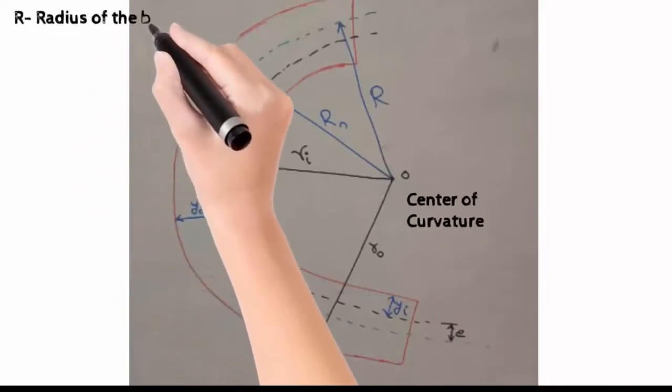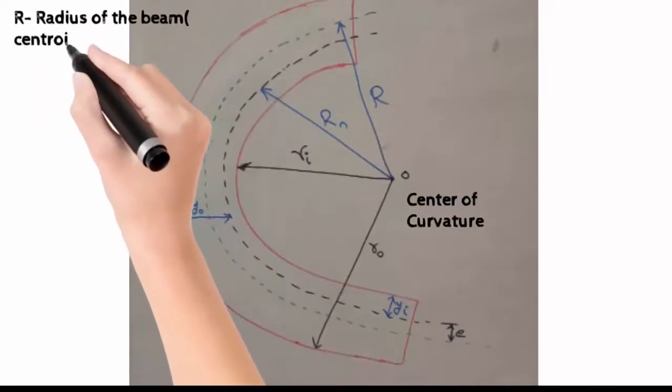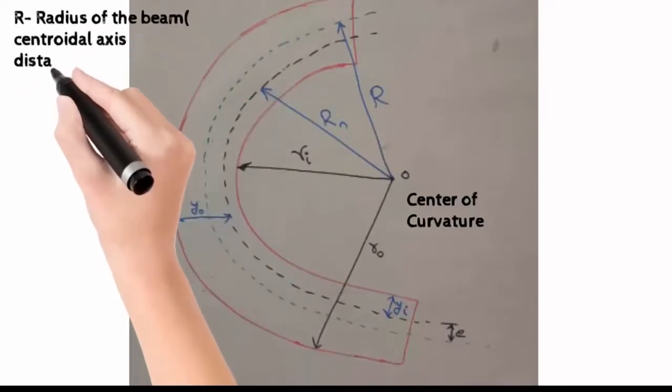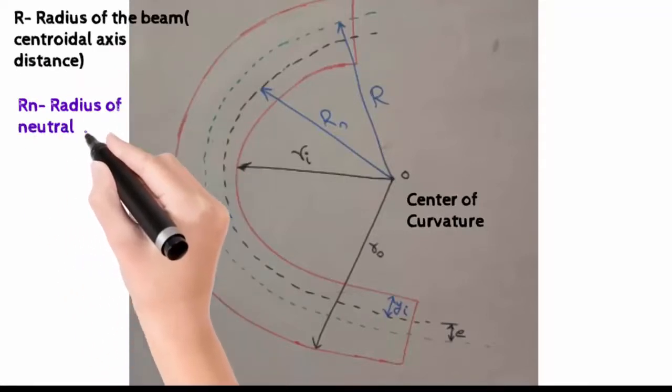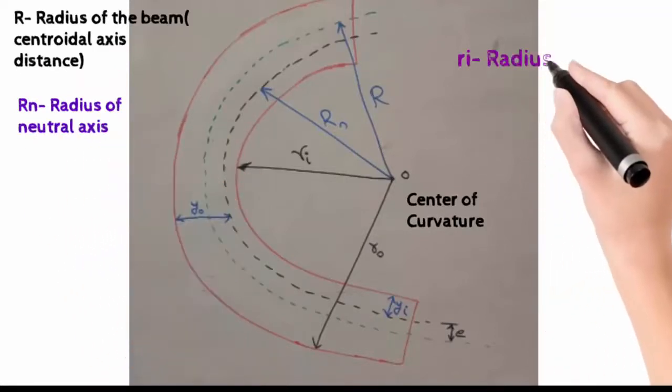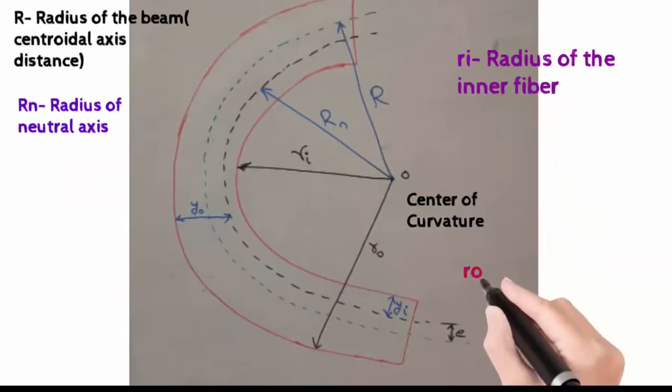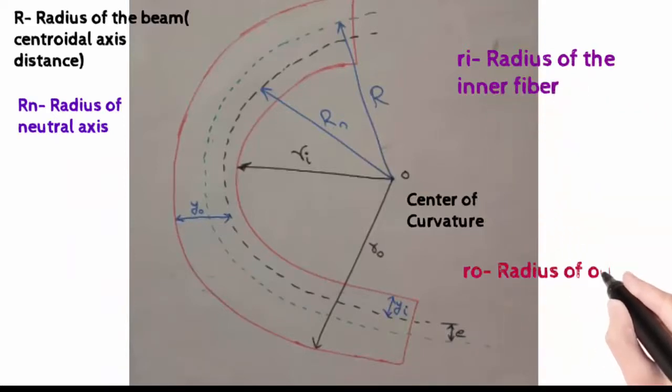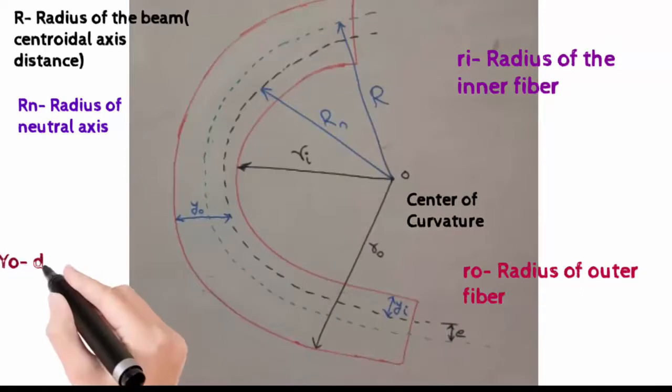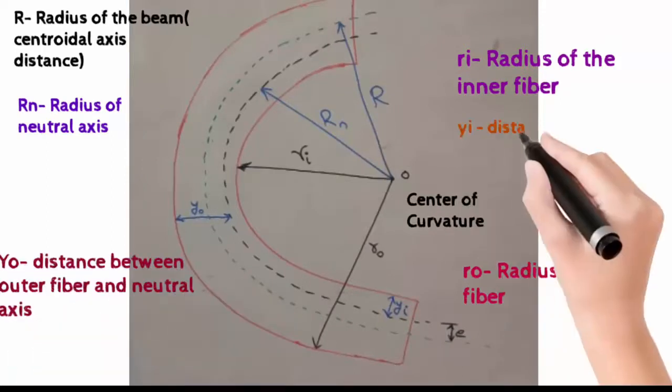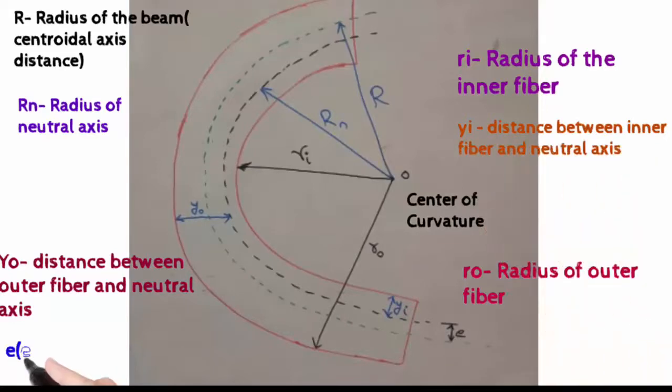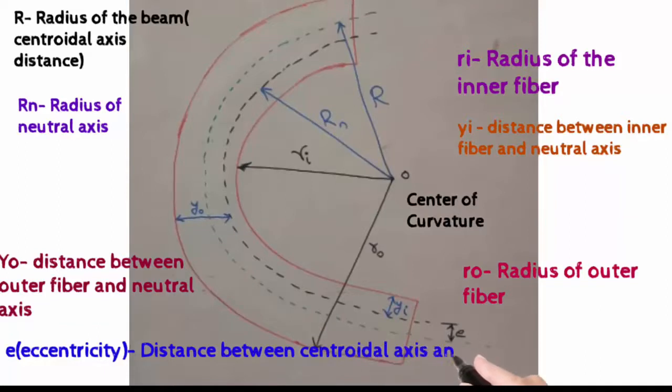Let R be the radius of the beam, that is the radius of the centroidal axis. Rn is the radius of the neutral axis. This is where the change comes in - in the previous case, both were the same. Ri is the radius of the inner fiber, R0 is the radius of the outer fiber. Y0 is the distance between the neutral axis and outer fiber, and Yi is the distance between the neutral axis and inner fiber. These two have different values in this case.